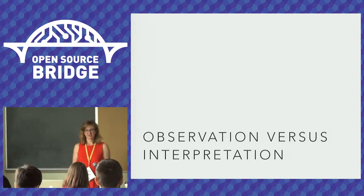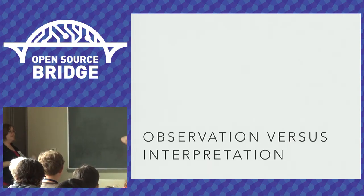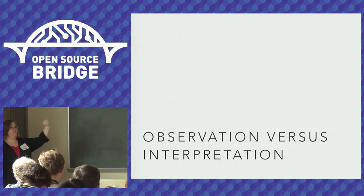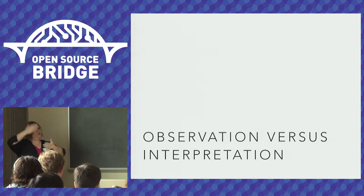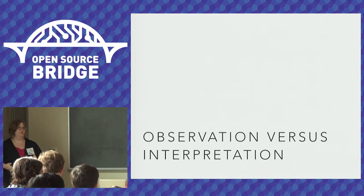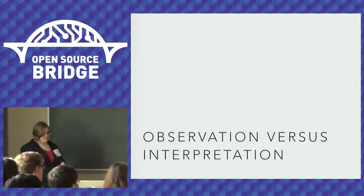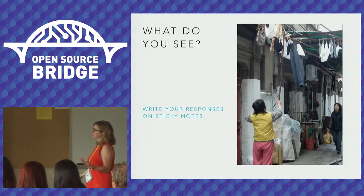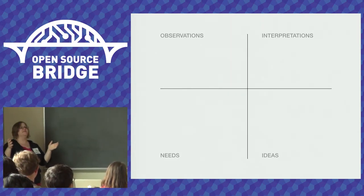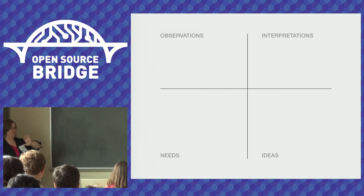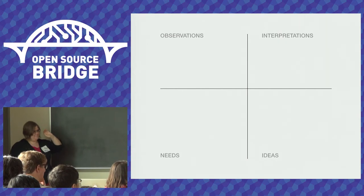Before we dive into our profiles, we want to give you a taste of what you do in fieldwork — how to look at a user's context, make observations, and distinguish between what is a dispassionate observation and what is an interpretation, where you're overlaying your preconceptions and biases onto your user's context. We want to know the difference because awareness of our own perspectives allows us to understand how folks who are different from us might have different needs. When we're in very insular environments, it's easy to lose that perspective.